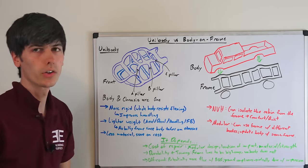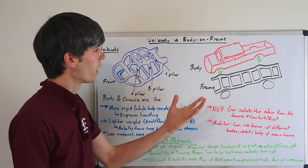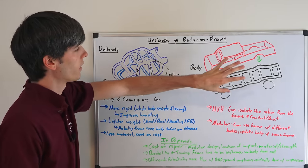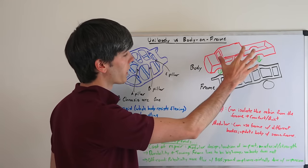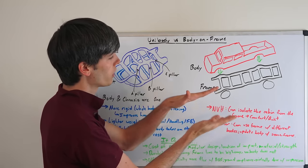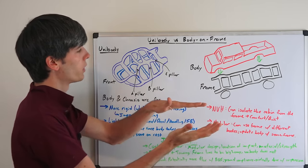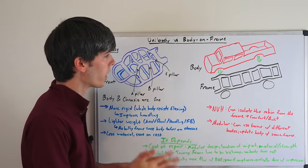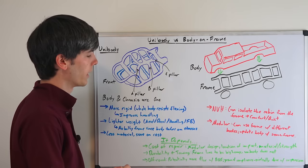So what are the advantages of body on frame? Well, from a noise, vibration, and harshness standpoint, NVH, this is going to kind of be ideal because you can isolate the body of the car from the frame. So you can have isolators on this frame, and essentially you've got another suspension between your frame and your body. And so you can have a more comfortable ride and a quieter ride using this kind of style, depending on how you engineer it.